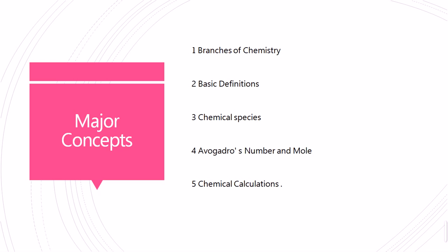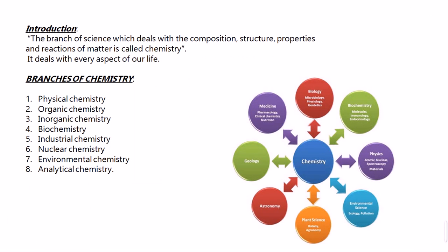I have selected the first chapter, which is Fundamental Chemistry. In this chapter, I will explain the basic concepts: branches of chemistry, basic definitions including atoms, compounds, mixtures — whether homogeneous or heterogeneous — chemical species such as cations, anions, Avogadro's number, and chemical calculations of atomic masses and atomic numbers.